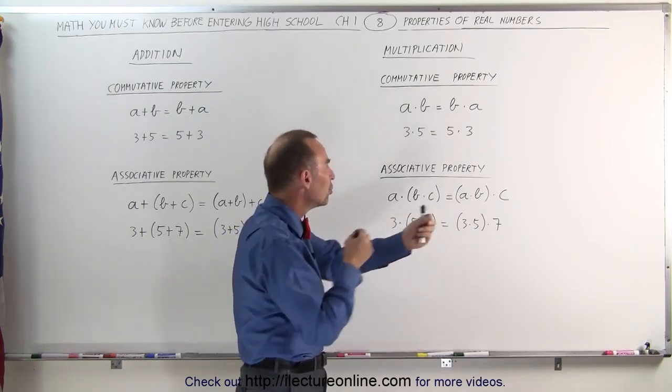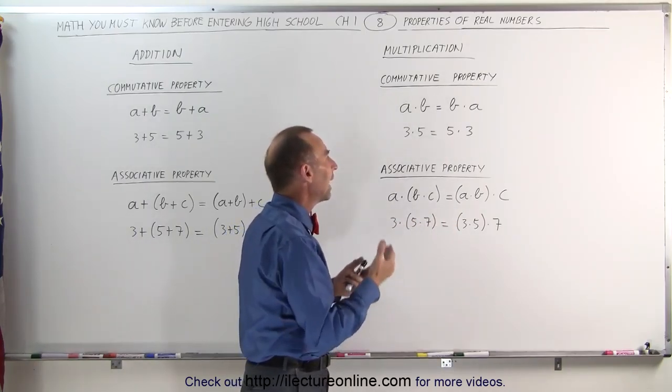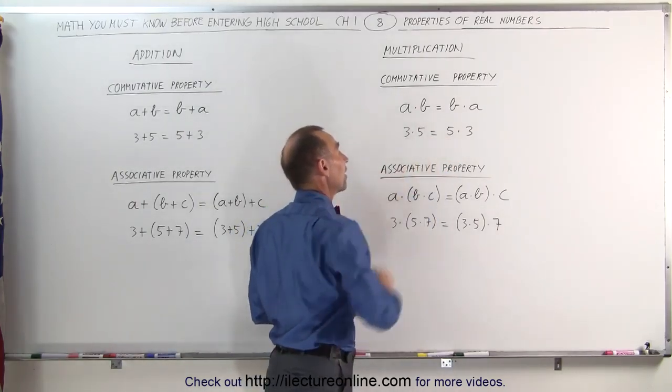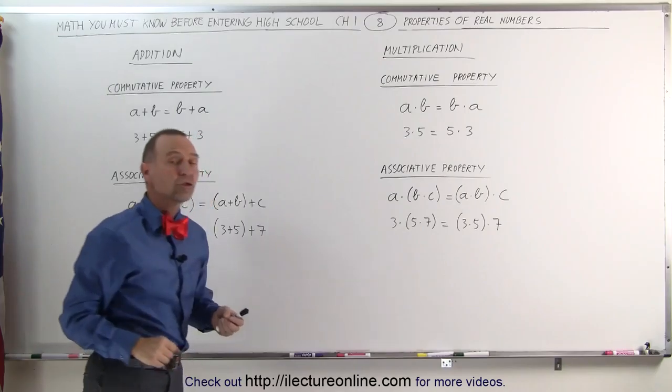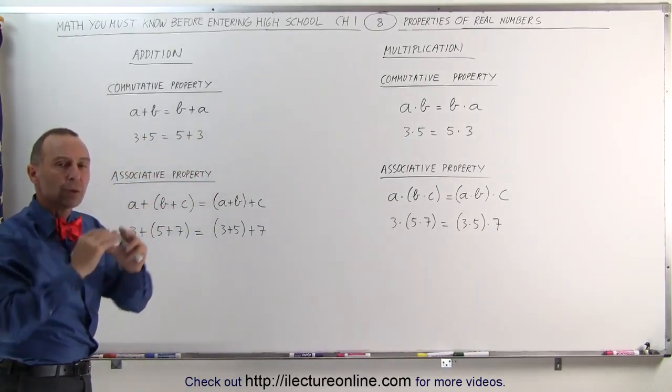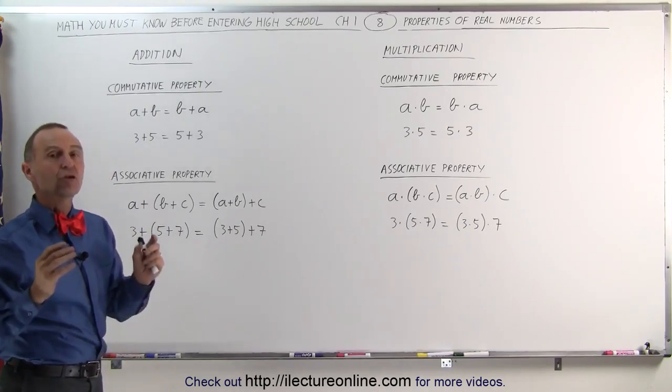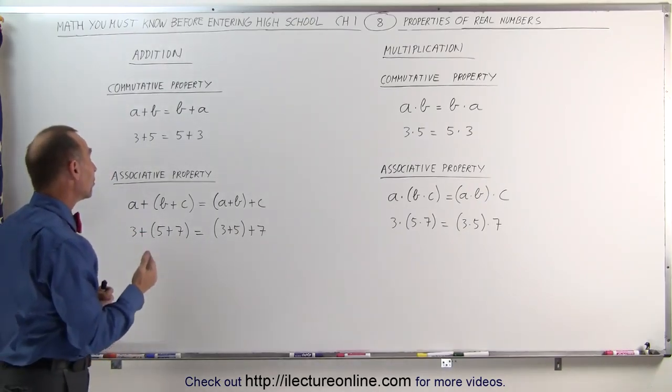Same with multiplication. We can say that A times B is the same as B times A, again because we can move numbers around. Think of commute as moving, as commuting, and so therefore we can move or commute the numbers around, and we get the same result. 3 times 5 is indeed the same as 5 times 3.